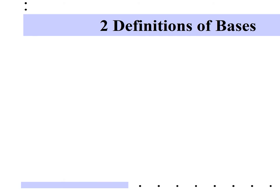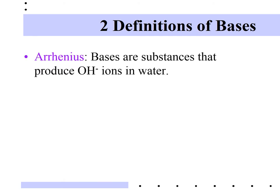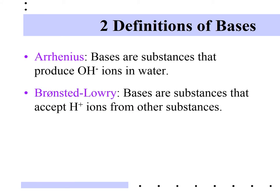The same two chemists also gave us definitions for bases. Arrhenius says bases will produce hydroxide ions (OH−) when dissolved in water. Bronsted-Lowry did not mention water and remained focused on hydrogen ions: whereas an acid donates hydrogen ions, they defined bases as substances that accept hydrogen ions. So an acid-base reaction involves the acid giving away hydrogen ions and the base accepting them.